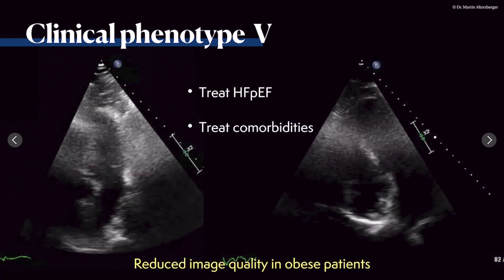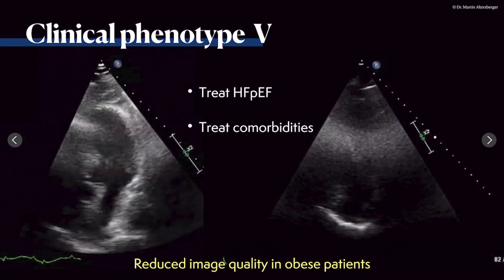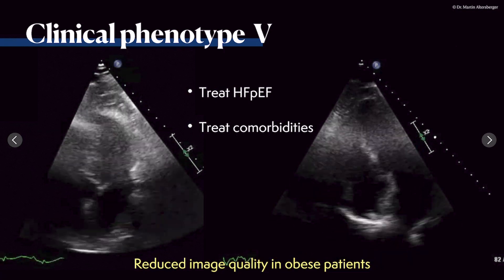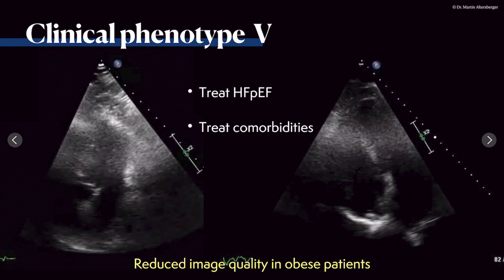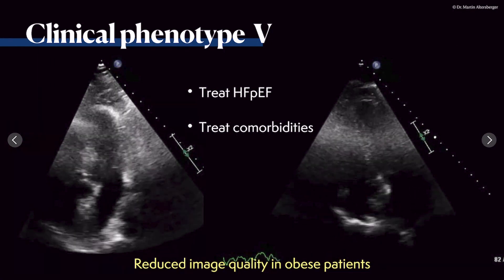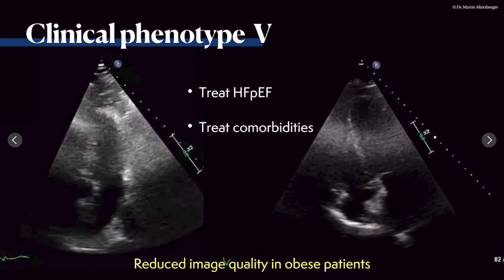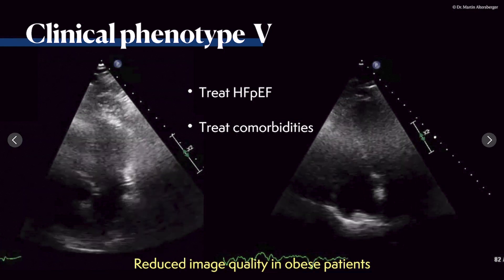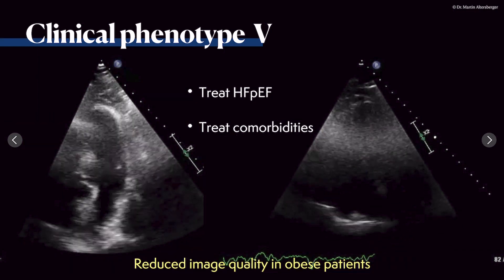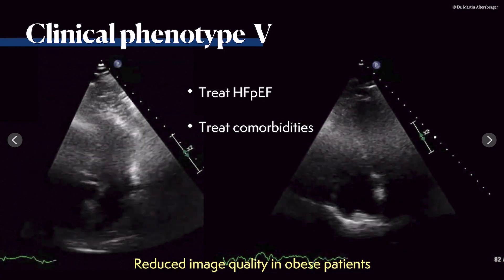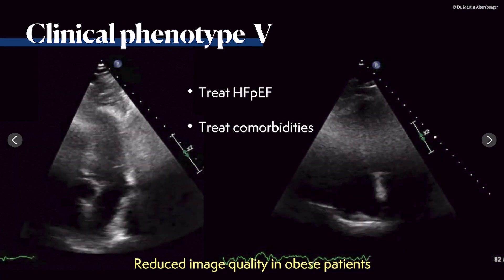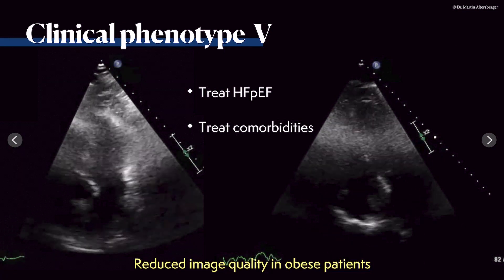In patients with a reduction in image quality, we always have to keep in mind that we can use contrast imaging. That, to a certain degree, limits our use of Doppler measurements — at least we have to be very careful with those. But with contrast agents, we can see how left ventricular function actually is, and we can also delineate the endocardial borders quite nicely to differentiate the thickness of the myocardium and the volume of the left ventricle.